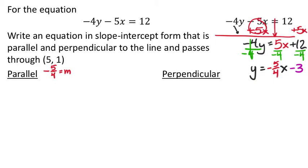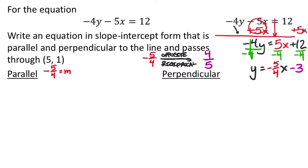For the perpendicular line, I take that slope negative 5 fourths and change it into its opposite reciprocal. This is going to be positive — changing the sign — and then I flip the fraction. Instead of 2 over 4... so instead of 5 over 4, we now have 4 over 5. Getting rid of the positive sign, the slope for the perpendicular line is 4 fifths.